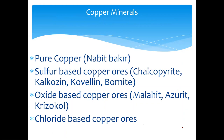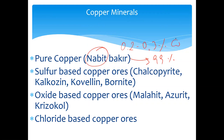In ancient times, people used to extract pure copper — called nabit copper in Turkish — and could directly use it at 99% purity. But nowadays you cannot find such purity. Instead of 99%, we are dealing with 0.2 to 0.3% copper, and at most 1% copper, which can be traded economically.